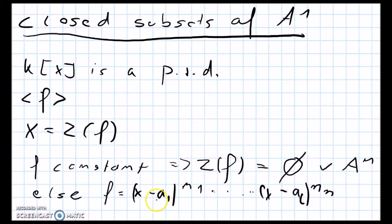And then we see that f is zero on a finite set of points in A¹. So to conclude, we found that